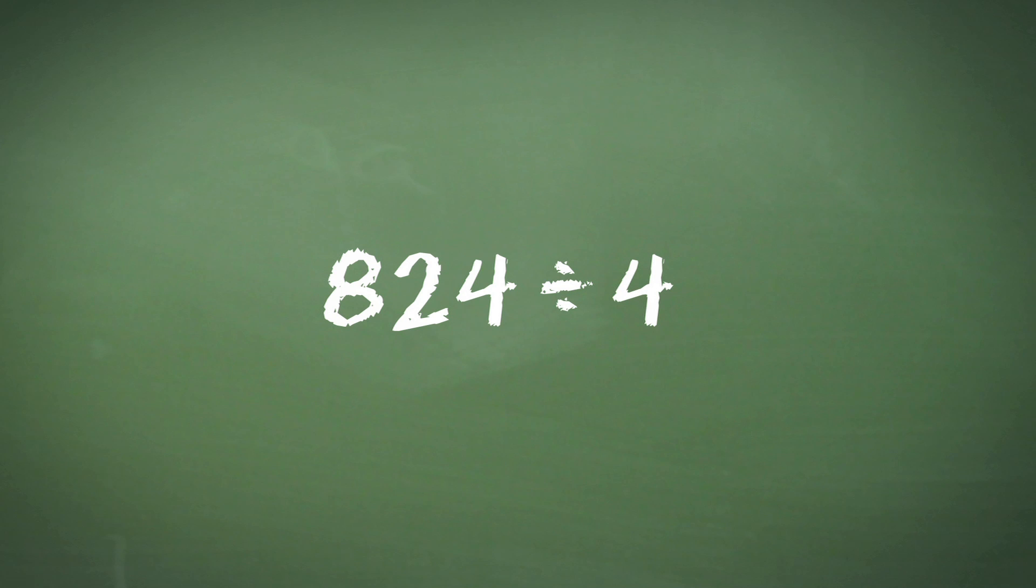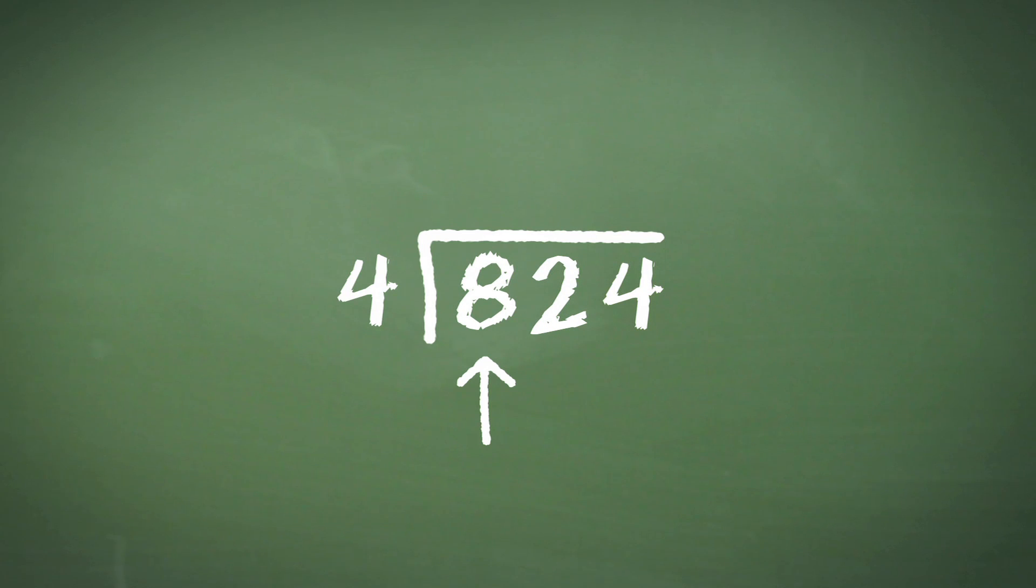Our first step is to lay out the calculation as follows. Rather than dividing the entire 824 all at once, we divide through one digit at a time, starting on the left with the hundreds column, which in this case is the 8.